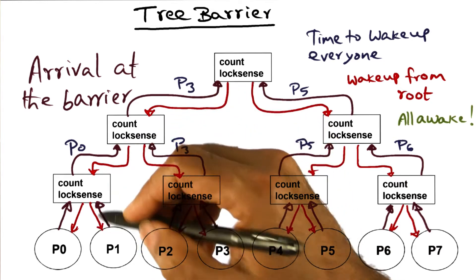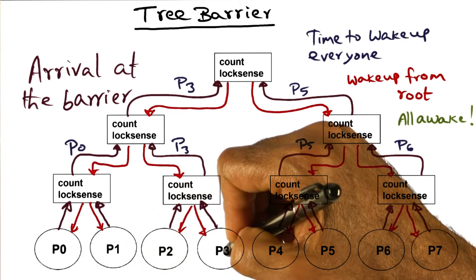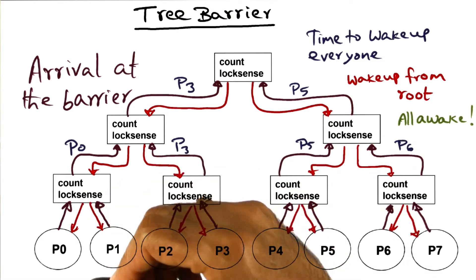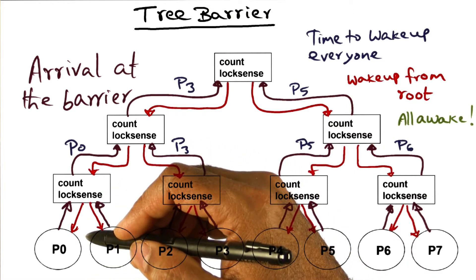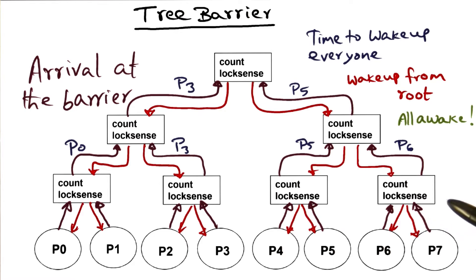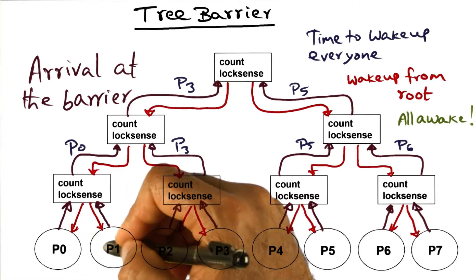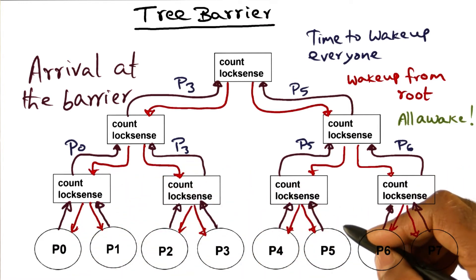So the lock sense flag that a particular processor is going to spin on is not statically determined, but dynamically determined depending on the arrival pattern of all these processors at a barrier. This arrival pattern is obviously going to be different for different runs of the program, since it depends on the amount of code executing on each processor and other variables such as how busy the processor is.